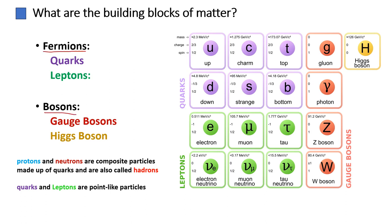Fermions are particles that make up matter and are characterized by having half-integer values of spin. They are divided into two groups. Quarks are fundamental particles that combine to form protons, neutrons, and other hadrons. There are six types, or flavors, of quarks: up, down, charm, strange, top, and bottom.